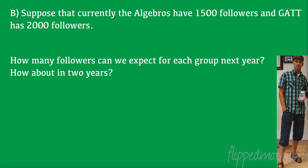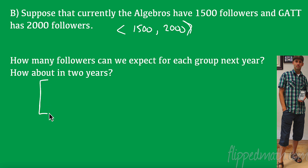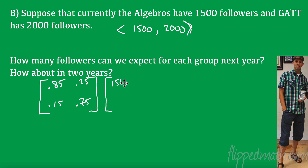Suppose currently the Algebras have 1500 followers and the GAT team has 2000 followers. We write that as a vector. How many followers can we expect for each group next year? We have our transition matrix — once you're using the matrix I don't expect labels, but I do expect labels when I ask for the transition matrix, because it's easier to construct.